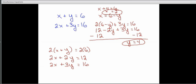So we have 2x minus 2x, we'll eliminate. We have 2y minus 3y, and that will give us negative y. And we have 12 minus 16 gives us negative 4. And now we'll multiply both sides by negative 1 to get y equals 4.